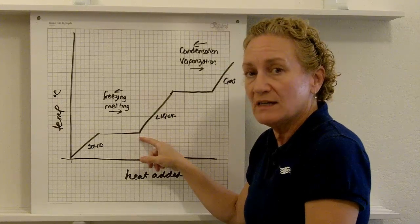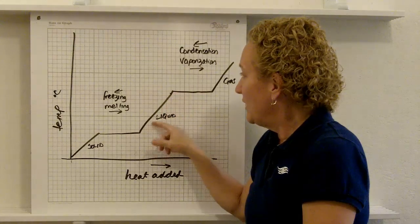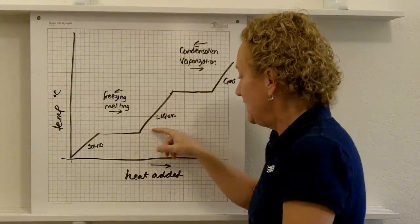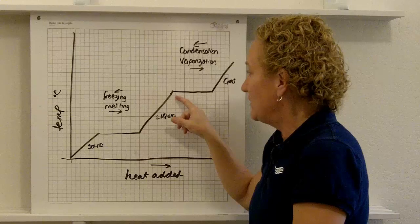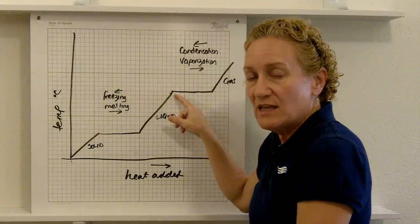Once it all becomes liquid, once it all has melted, this is liquid right here. It's going to, as you add heat, continue to increase in temperature. If this was water, it would increase in temperature until it's 100. And at 100,